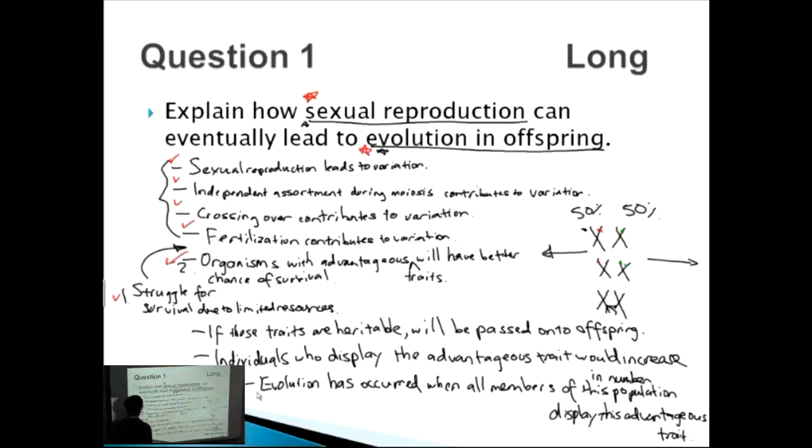And we also had organisms with advantageous traits having a better chance of survival. You just need to outline these very step-by-step, in a very step-by-step process. So we had five there, so if we have that all up, then we have about nine points which should give us the allocated marks.